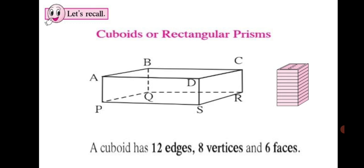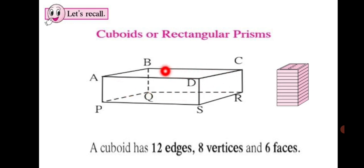How many faces does it have? The top rectangle ABCD is one face, the bottom rectangle PQRS is another face, and there are 4 faces at the sides. So altogether 4 plus 2, 6 faces a cuboid has. So a cuboid has 12 edges, 8 vertices and 6 faces.